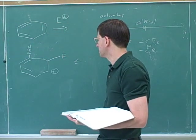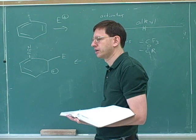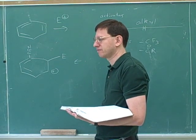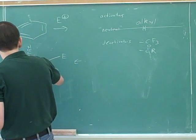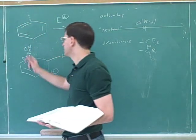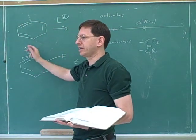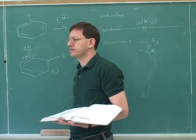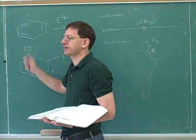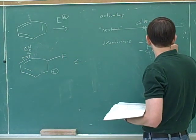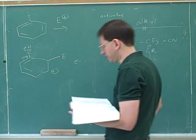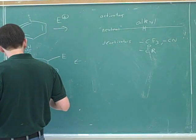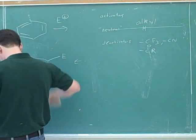Here's a cyano group (C≡N). Is it electron donating or withdrawing? Withdrawing — through resonance. The nitrogen is the most electronegative atom, so it tends to pull the pi electrons toward itself. Through resonance this group is electron withdrawing, and there's also an induction effect that is electron withdrawing. So a cyano group would be a deactivator.